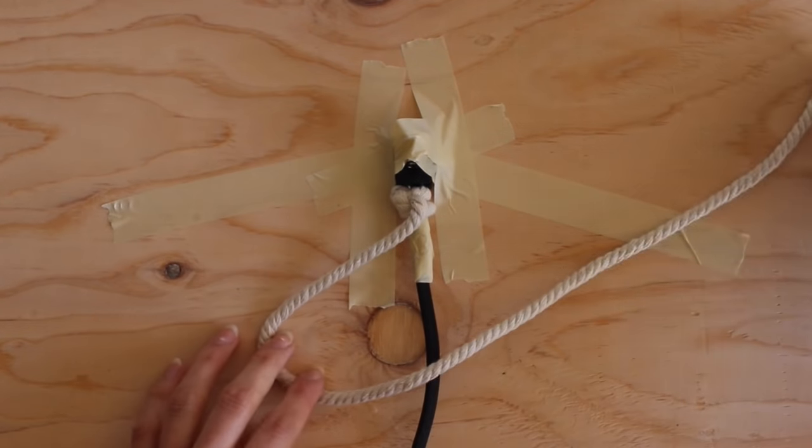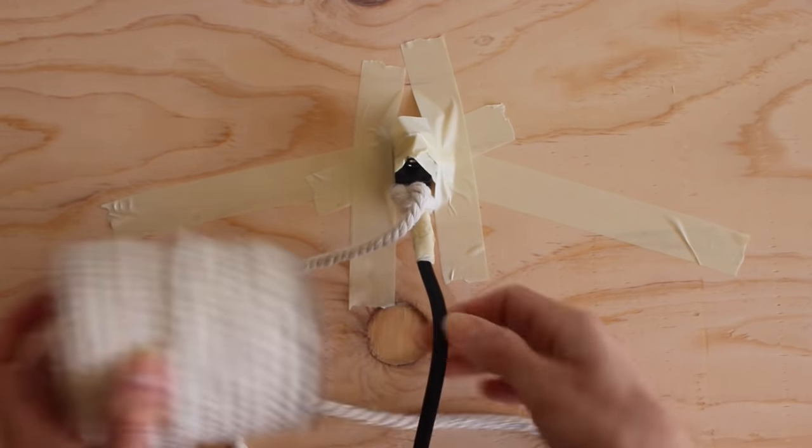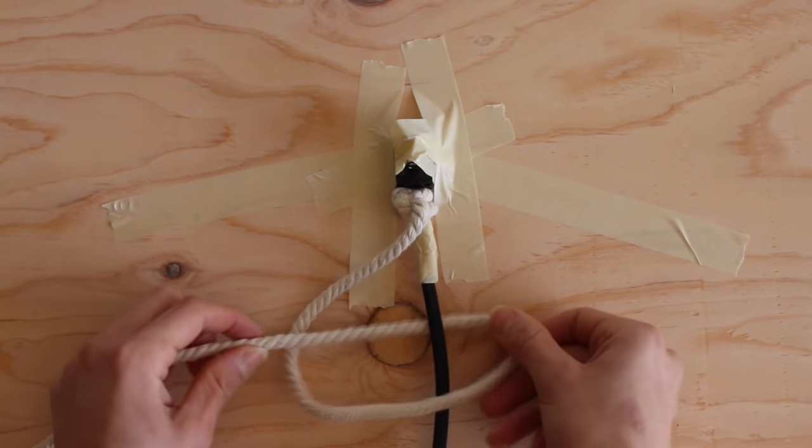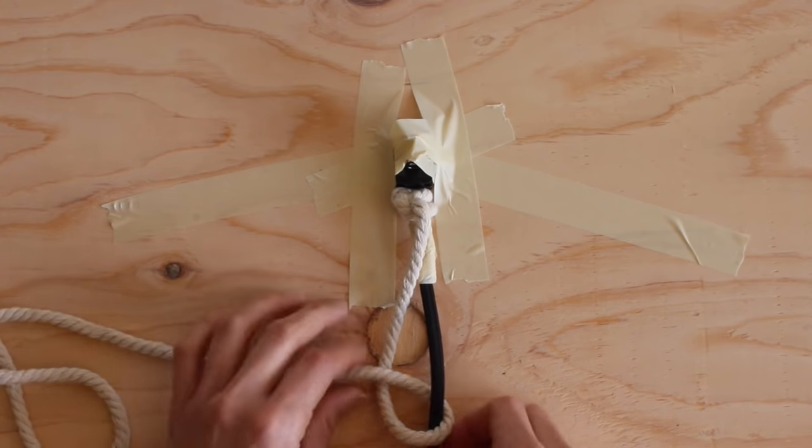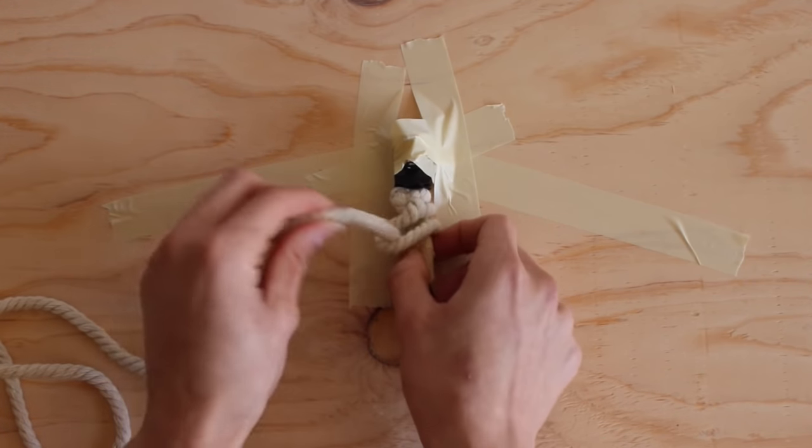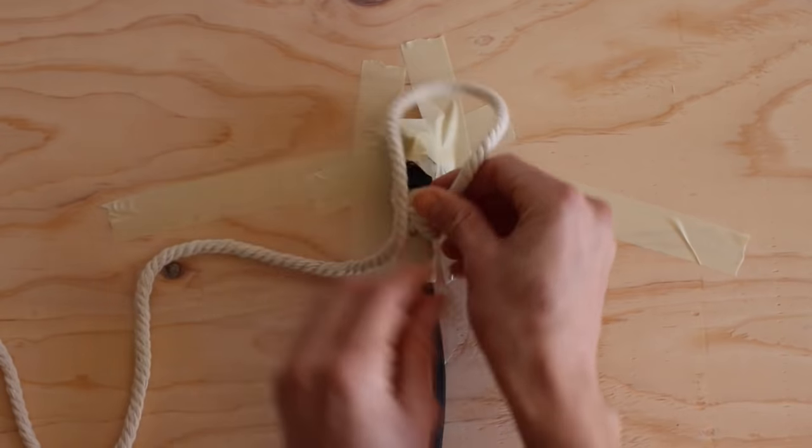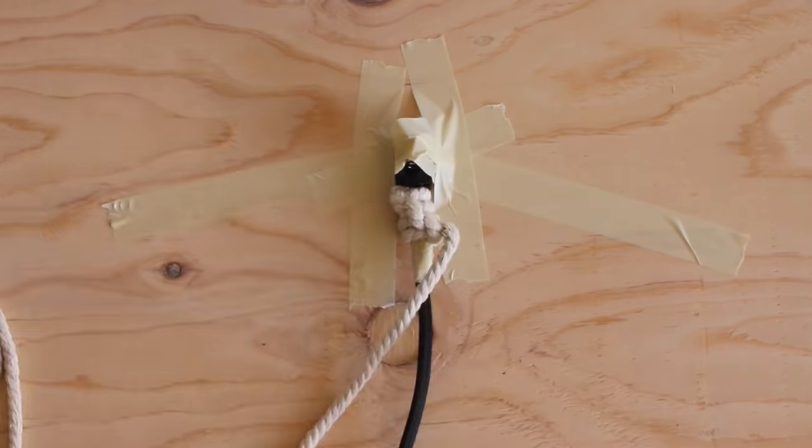So once again, you make a number four with the rope on top of the cord. Feed the macrame behind the cord and through the four's little opening, and pull it tight. And then you're going to repeat that step over and over until the cord is covered. And yes, it is tedious,